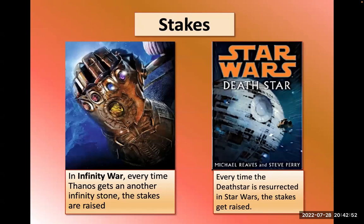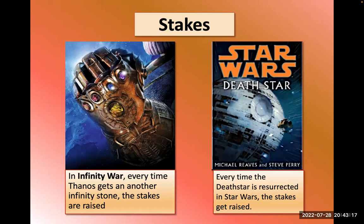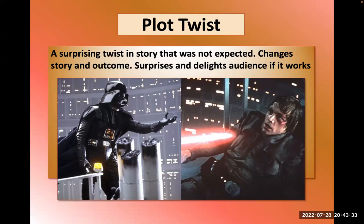Raising the stakes: every time Thanos gets one of the Infinity Stones in the Avengers movie, the stakes are raised — he's getting more powerful and harder to stop. In the original Star Wars script, the Death Star was not about to destroy the rebel base, but they changed it, making the rebel base about to be destroyed — thereby raising the stakes. If the characters are in more danger, it's more interesting for the audience.